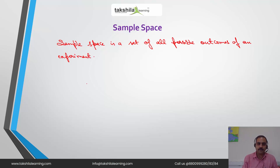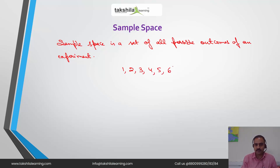For example, if we roll a die, the possible outcomes are 1, 2, 3, 4, 5, and 6. When we place these elements in curly brackets, it forms the sample space for rolling a die.